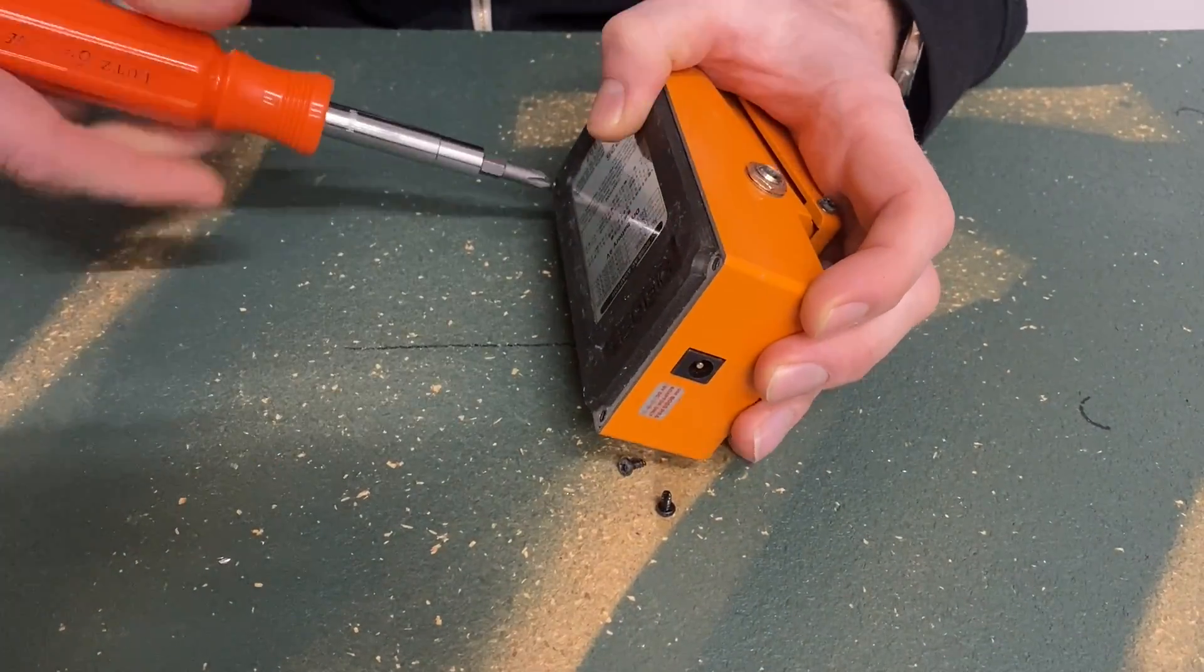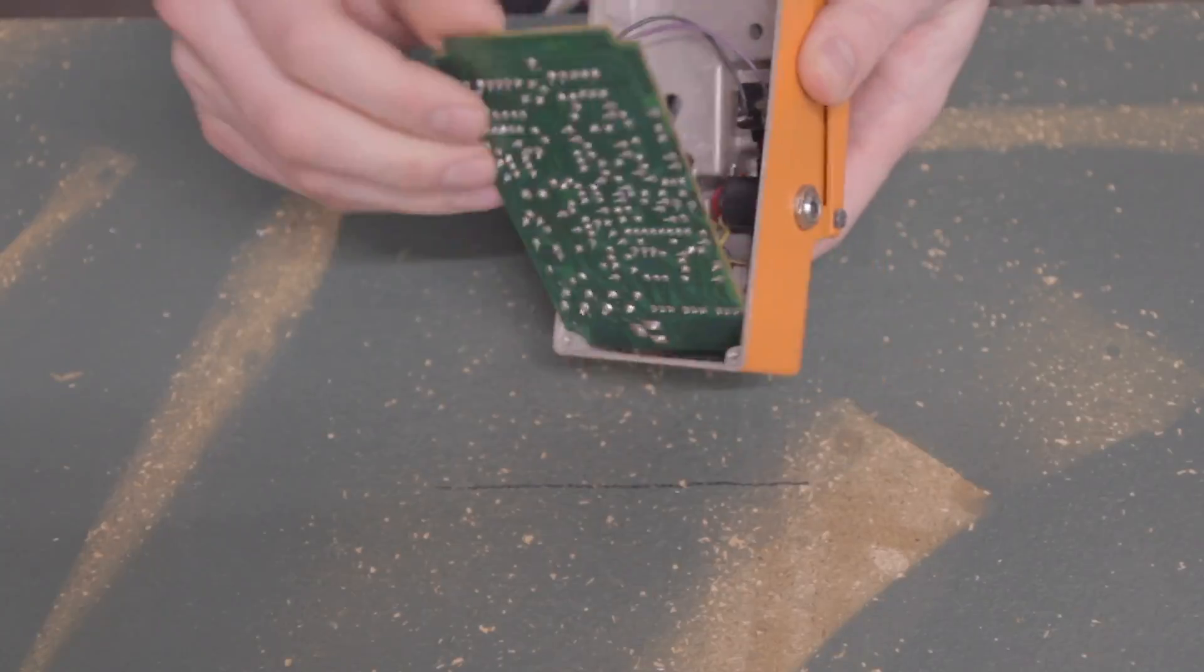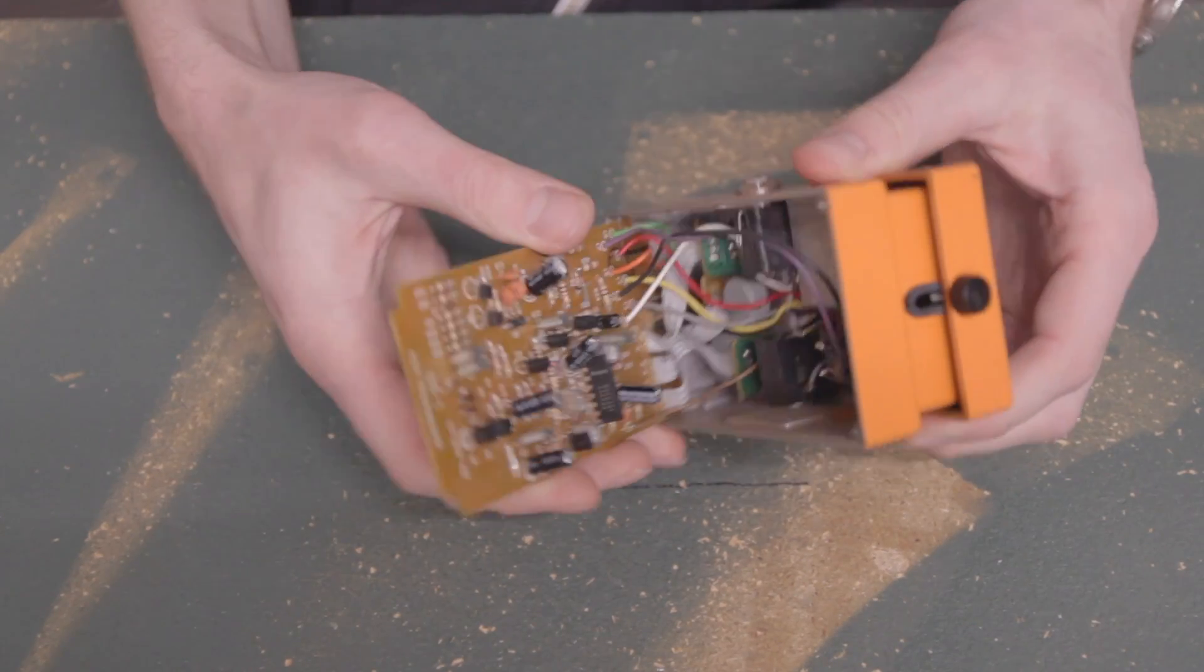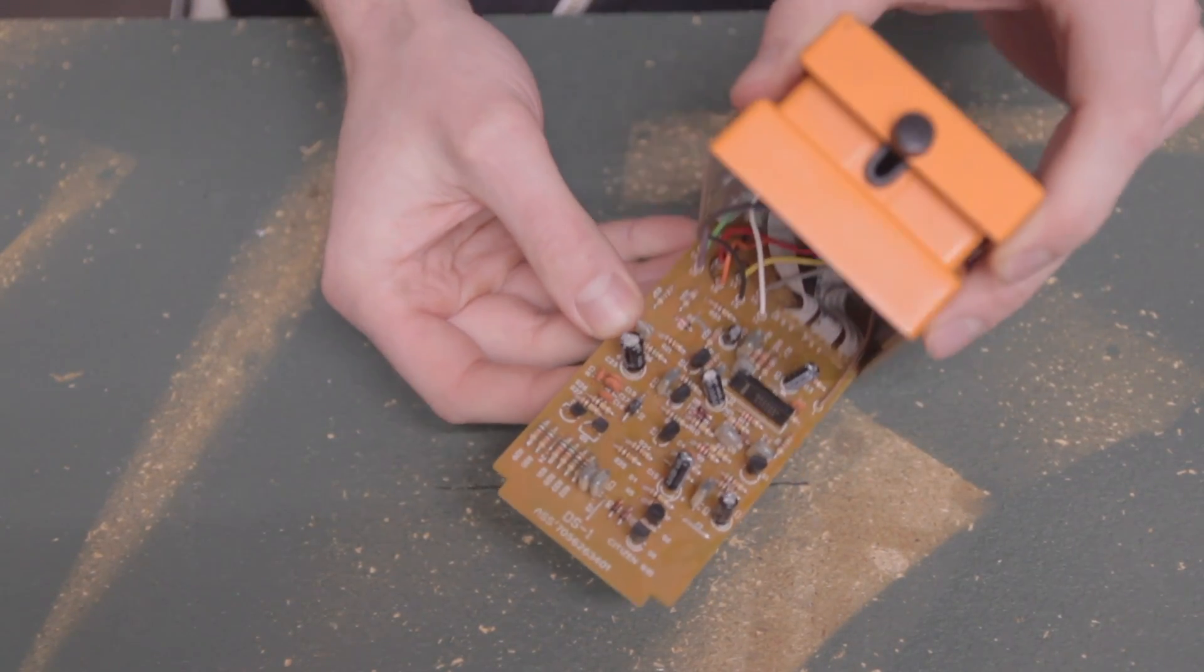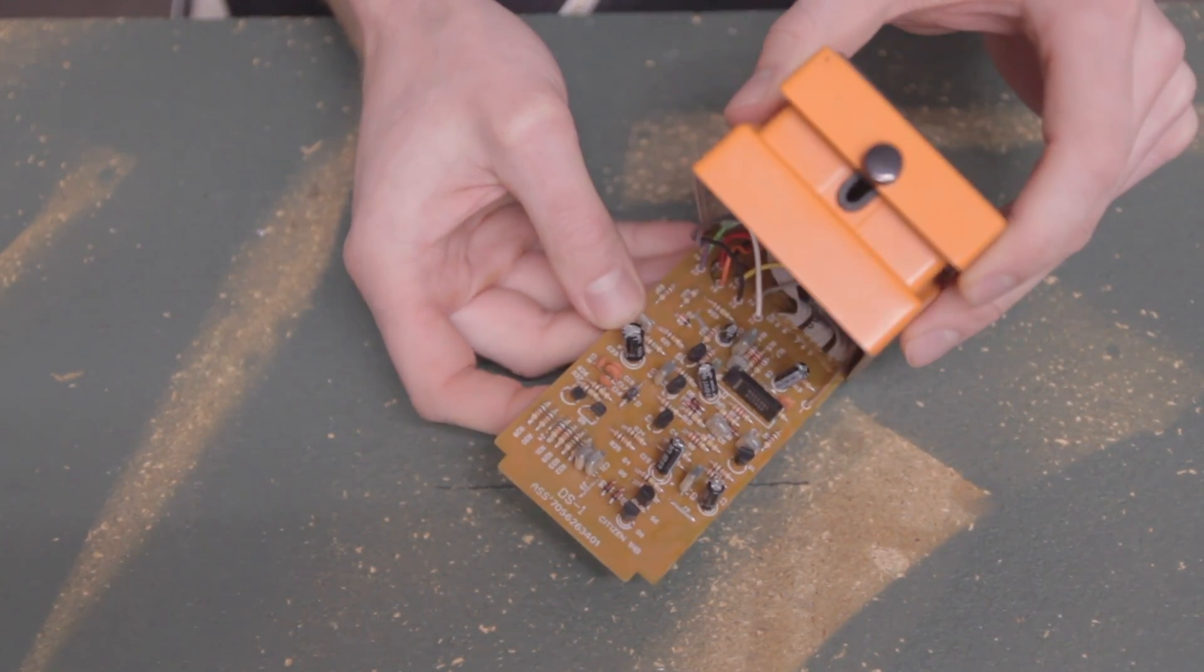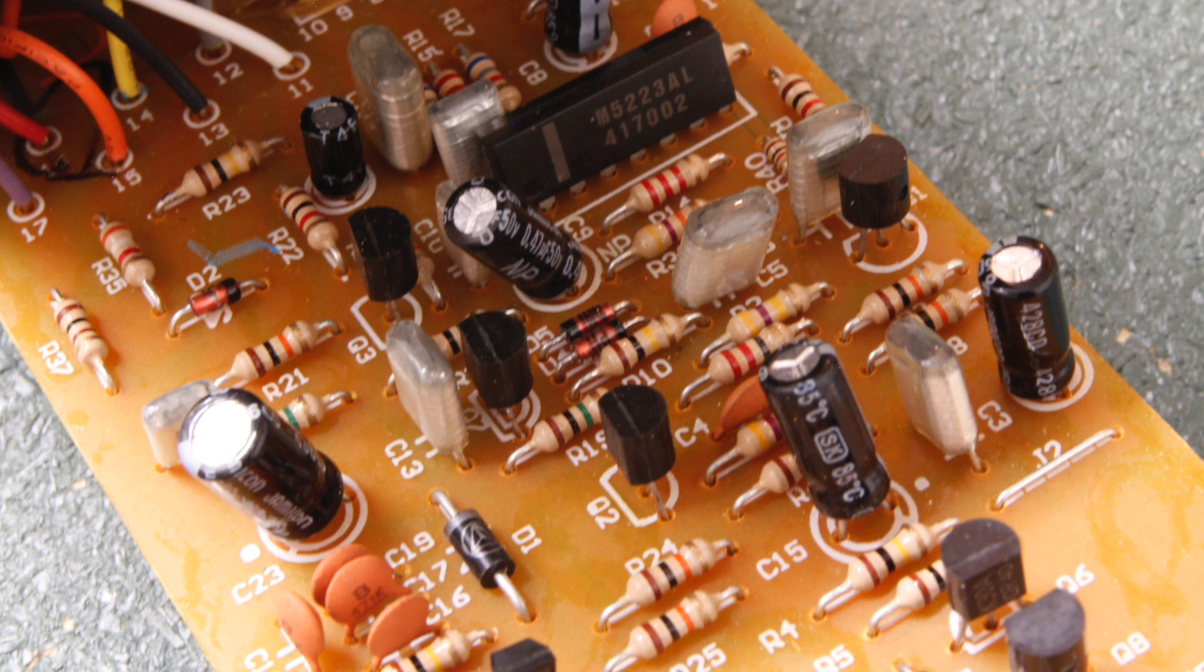The first thing you need to do is open your pedal by taking the four screws off the back lid. Gently pull the circuit board away from the enclosure. Locate your diodes. On these older Boss DS-1s, they are located here and are labeled D4 and D5.